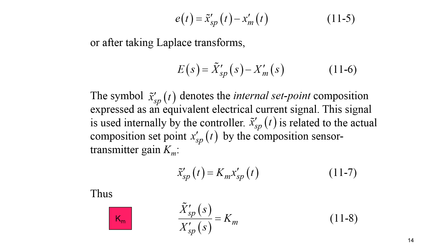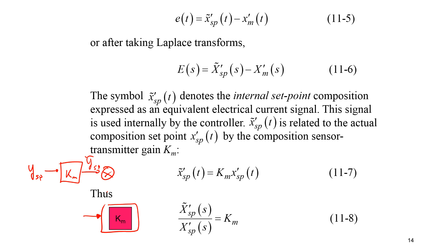For the measurement, it translates concentration into a signal — in this case a milliamp signal. We're going to assume the sensor is fast, with time constant equal to zero. We use KM to translate the set point Y-SP into Y-tilde-SP, so that the measurement and the tilde Y-SP are in the same units for comparison in our error calculation going into, for example, our PID controller.